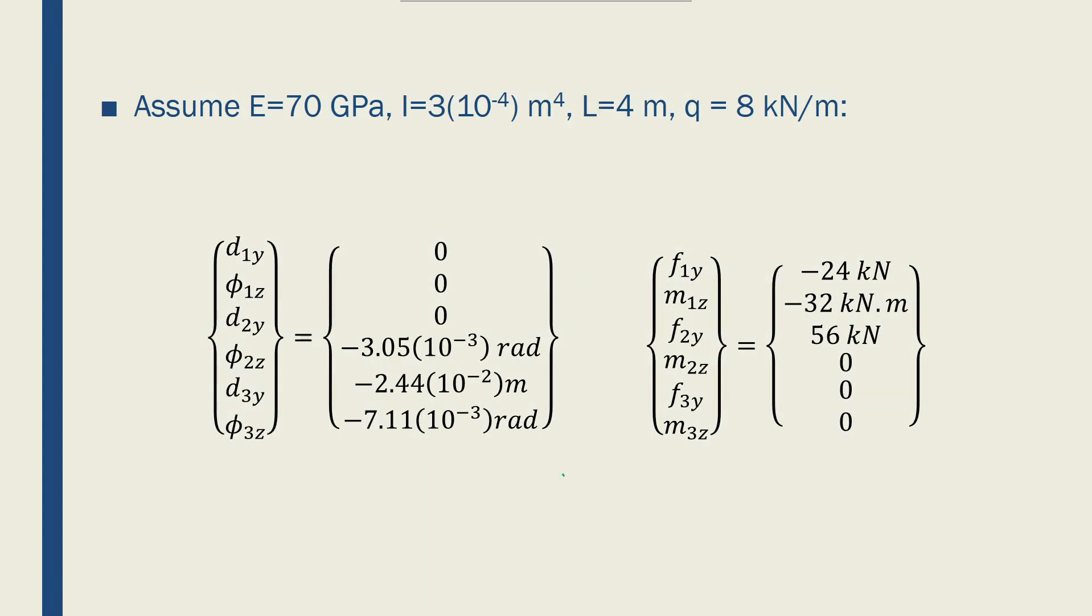If I assume these values for my problem: Young's modulus of 70 gigapascals, I of 3 times 10 to the minus 4 meter to the 4, L equals 4 meters, and q is 8 kilonewtons per meter. I'll end up with these values, and I've written a MATLAB code to solve for this. Let me show you how it works.